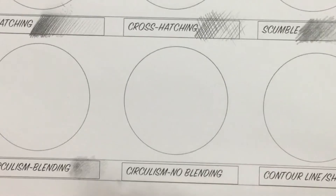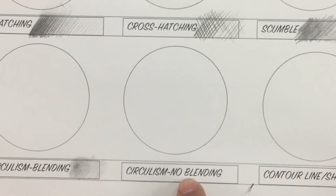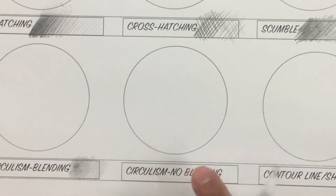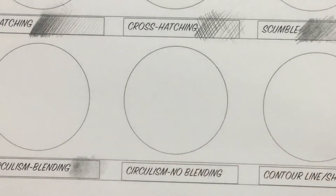Circularism with no blending means I'm not going to use a blending tool, q-tip, tissue, or even the tip of my finger to do any blending.